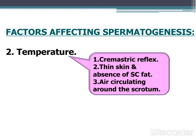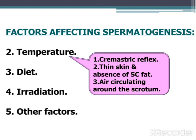Air circulating around the scrotum also helps. Diet for spermatogenesis requires an adequate amount of protein, vitamins such as vitamin A and vitamin E, and other elements. Exposure of the testes to large amounts of X-ray radiation destroys spermatogonia and arrests spermatogenesis. Other factors include oxygen availability.